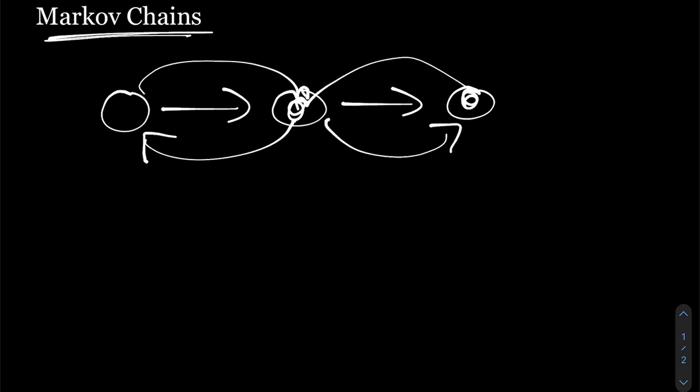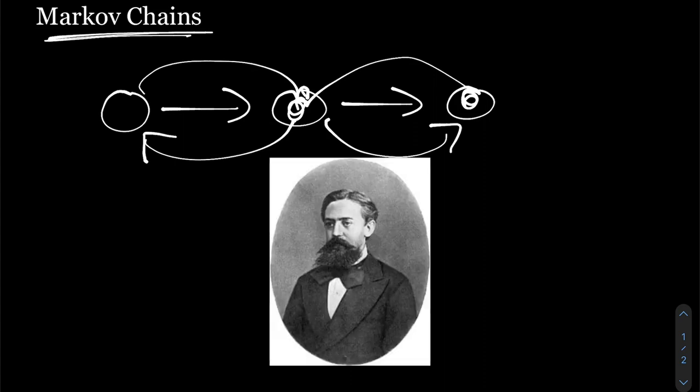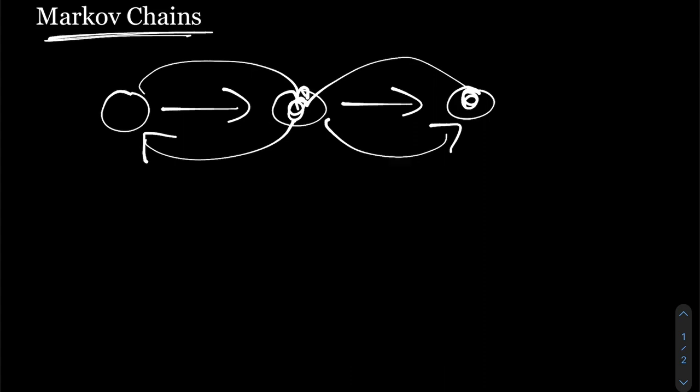Now you might be thinking, isn't this how most chains of events work? Why is this Markov dude getting so much credit for it? Well there's another subtlety to it, and to better understand it, I'm going to need to introduce you to stochastic processes. And if you already have a good understanding of how stochastic processes and random variables work, skip over to the next timestamp. But for now, I'm just going to give a brief overview of what stochastic processes are.